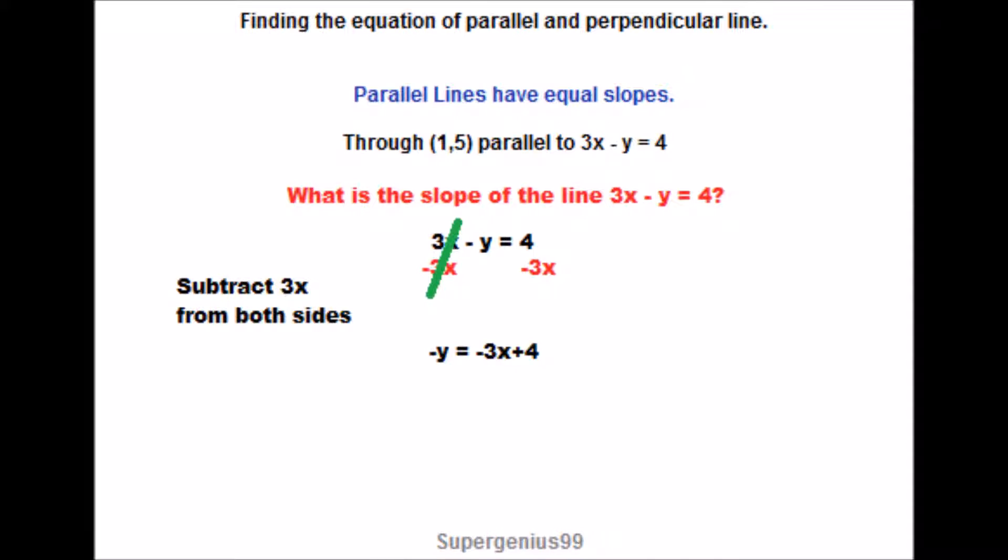So what's our next step? We want to have it in terms of a positive y. So since y is negative right now, we need to multiply both sides by negative 1. And that will leave us with a single y on one side. And then what's negative 1 times negative 3x? 3x. And what is negative 1 times a positive 4? It can be either minus 4 or plus a negative 4. Both are the same.